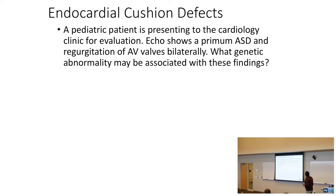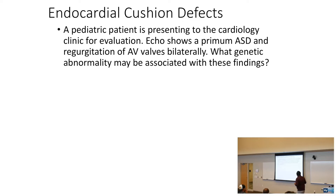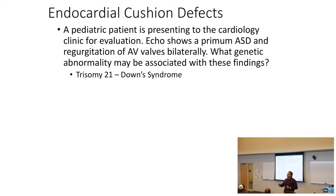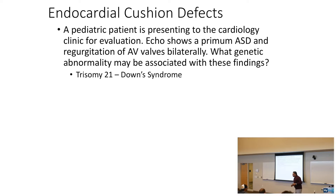Endocardial cushion defects: a pediatric patient presenting to the cardiology clinic — echo shows a primum ASD and regurgitation of the AV valves bilaterally. What genetic abnormality is associated? Down syndrome — trisomy 21. Endocardial cushion defects equal Down syndrome.